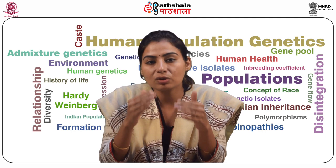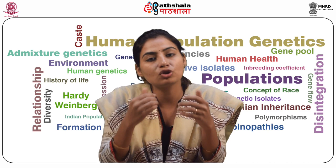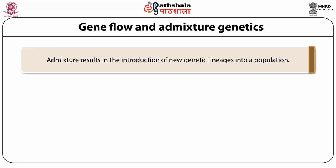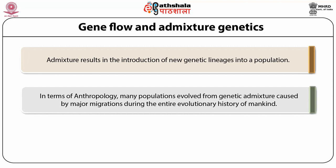Emigration, on the other hand, might result in the loss of genetic variants from the already established gene pool of a population. Admixture genetics refers to the genetic structure of the hybrid or admixed population. The neighboring populations frequently exchange individuals, contributing to an ongoing process of bidirectional gene flow between themselves. It occurs when individuals from two or more previously separated populations begin interbreeding. Admixture gene flow results in the introduction of new genetic lineages into a population. It is known to slow local adaptation by introducing foreign unadapted genotypes, and it also prevents speciation by homogenizing populations. In terms of anthropology, many populations evolved from genetic admixture caused by major migrations during the entire evolutionary history of mankind.